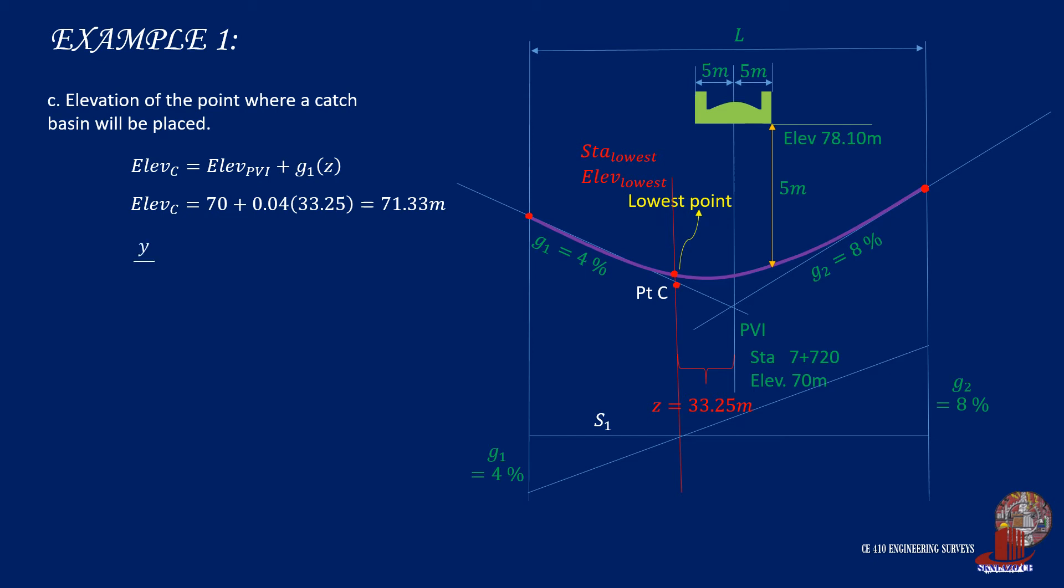The next thing to do is to determine Y, which would use the proportionality. X takes S1, H is computed as 2.99, and half of L is 99.75. So Y is computed as 1.33 meters. The elevation of the lowest point is then computed as the summation of the elevation of point C with Y, and that would give 72.66 meters.